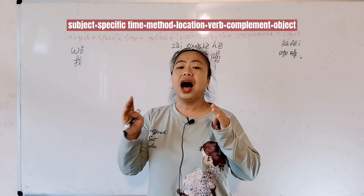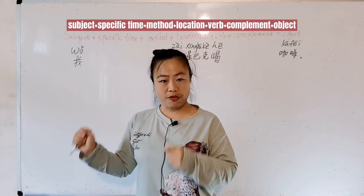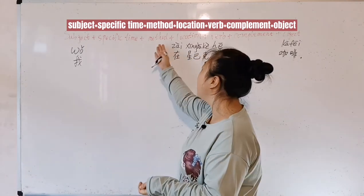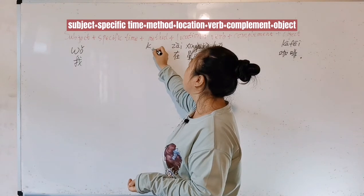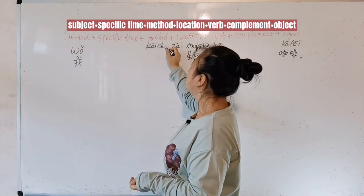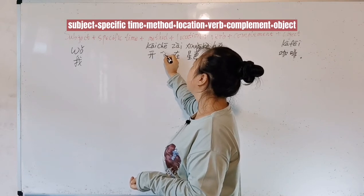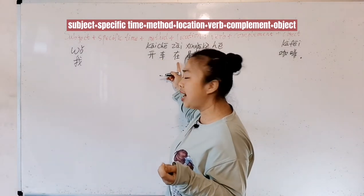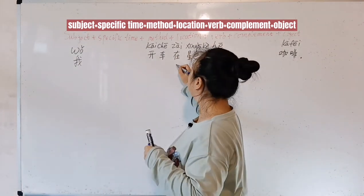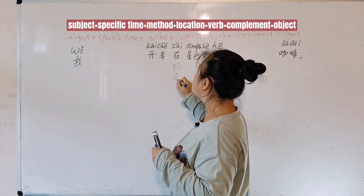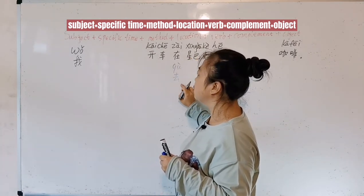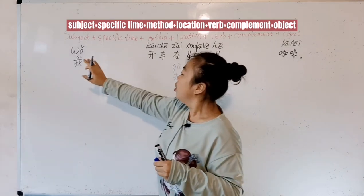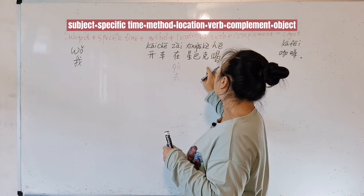How about 'I drive to Starbucks to drink coffee'? Where do we put 'drive to'? 'Drive to' is how we go there, which is a method, so it goes in the method slot. Drive is kāi chē. 'To go to' is qù — not zài, which means 'at'. So we replace zài with qù. Wǒ kāi chē qù xīnbākè hē kāfēi means 'I drive to Starbucks to drink coffee'.